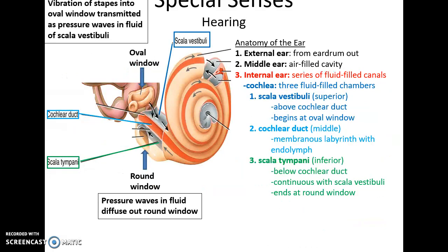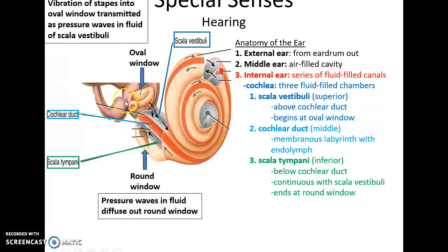Starting with hearing within the cochlea — if you look at the cochlea, there are three fluid-filled chambers. There is the superior chamber called the scala vestibuli, directly above the cochlear duct. The second fluid chamber is the cochlear duct itself, with the cochlear membrane. And then below that, inferior, is the scala tympani, the third chamber. The scala vestibuli and scala tympani are filled with perilymph, while the cochlear duct is filled with endolymph. They connect at the apex of the cochlea. The scala vestibuli connects to the oval window, so vibrations from the oval window go into the scala vestibuli.